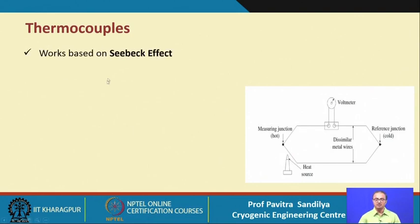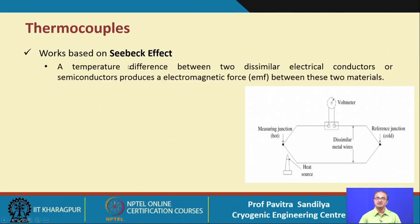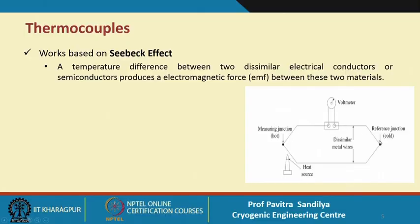Let us see the thermocouples. These work on the Seebeck effect, which causes a change in EMF between two materials when there is a difference in temperature. The two materials are joined at one point, and two different temperatures are applied to the two limbs. An EMF is generated and we measure that EMF to find the temperature. There is one hot junction and one cold junction.